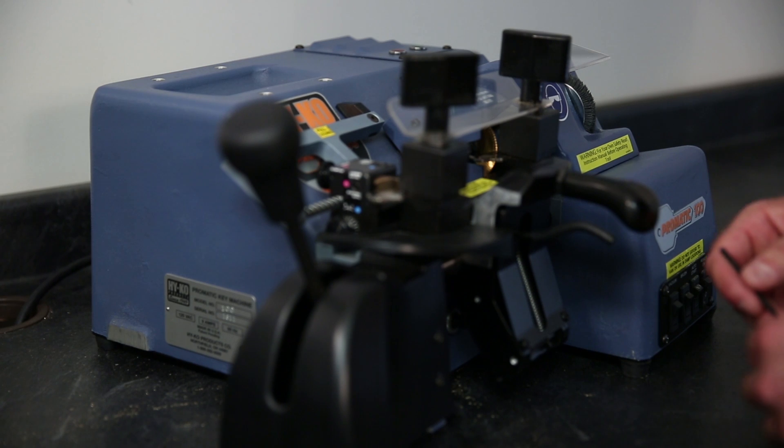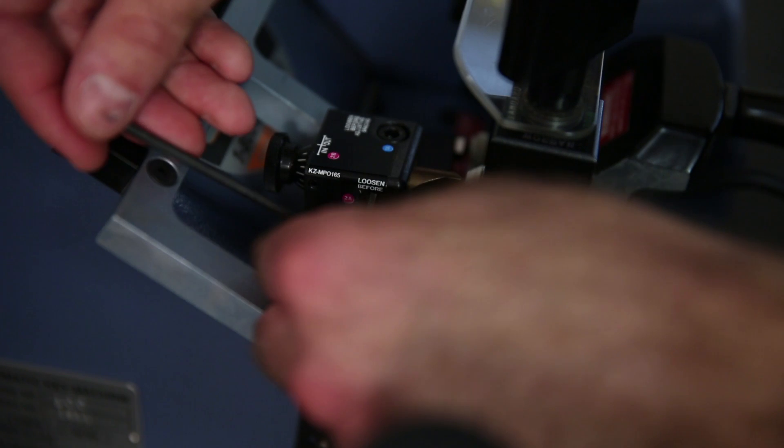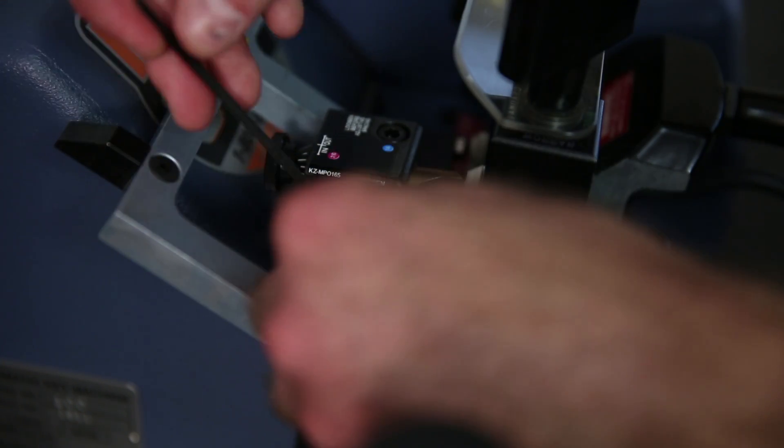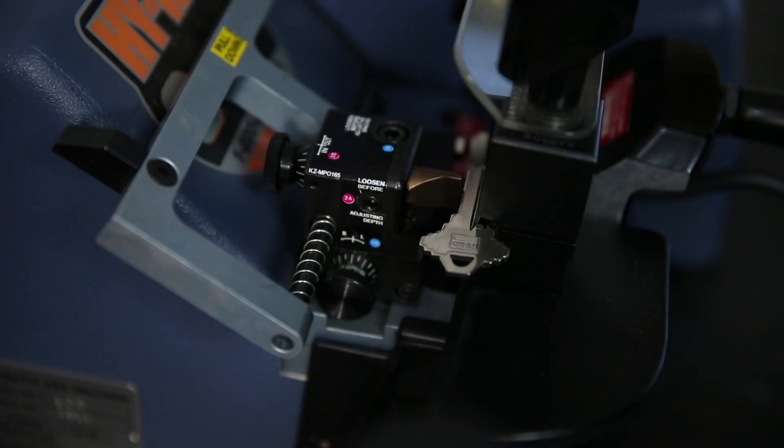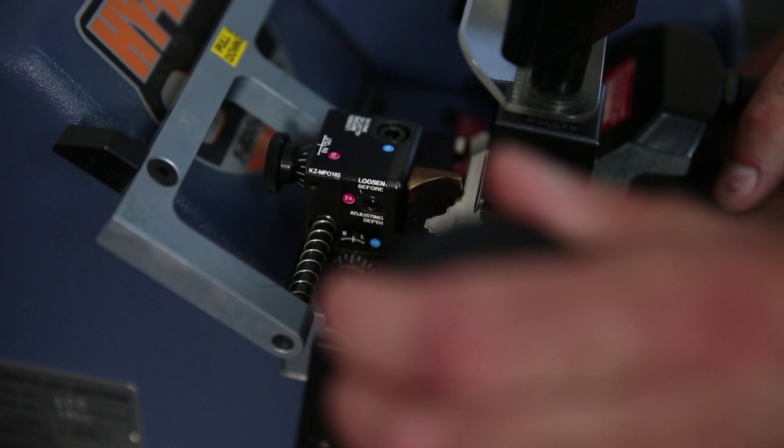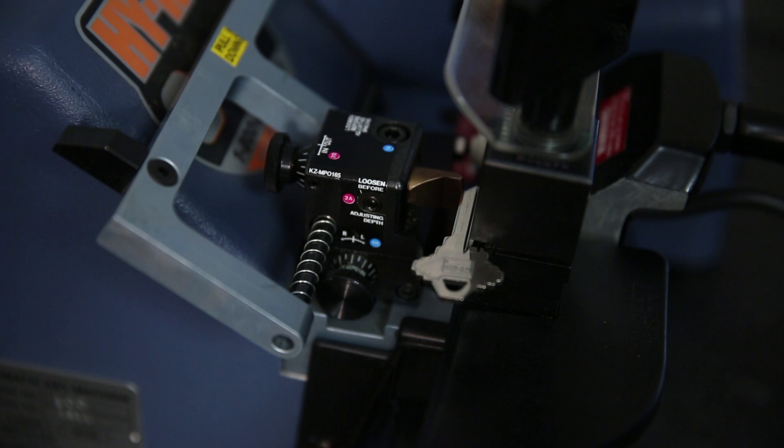Lock the locking screw on the left side of the tracer block. Check the front and back portions of the keyblade to make sure the grinding is consistent across the blade. If it is not, additional adjustments may need to be made.